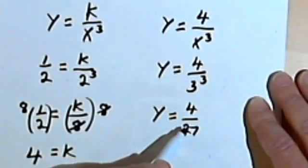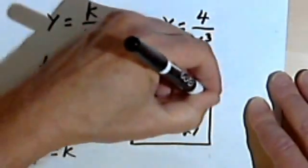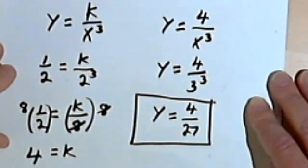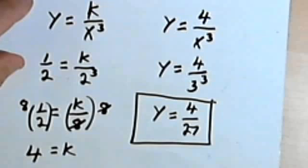And I can't simplify 4 over 27. I can't reduce that at all. So that's going to be my answer. Okay, so this is pretty straightforward. You should be fine with this. Just get enough practice so you know you're comfortable with it. Okay, I'll see you next time.